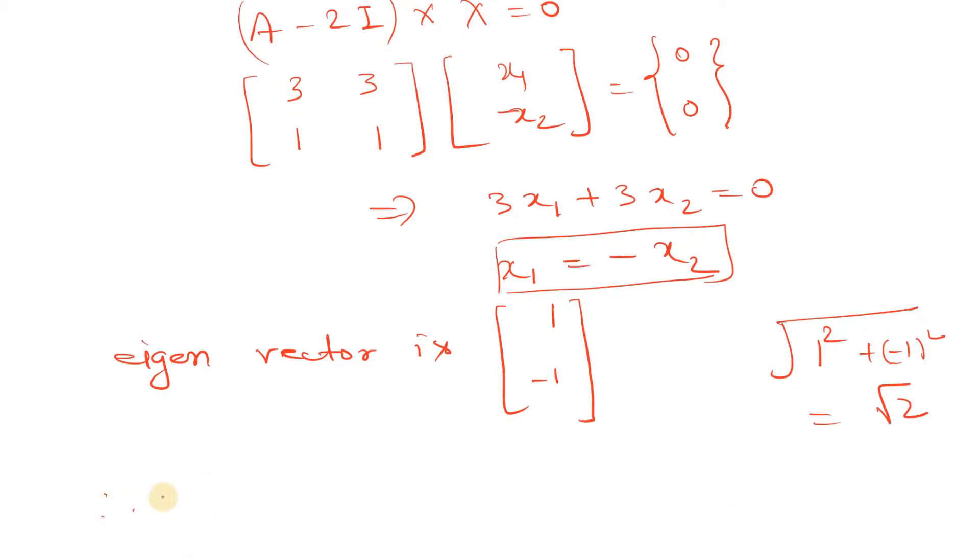So the required normalized eigenvector will be equal to: 1 upon root 2 will be 1 upon root 2, and this will be minus 1 upon root 2. So this is our normalized eigenvector.